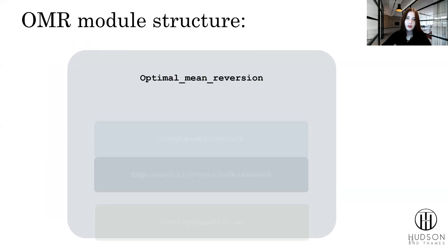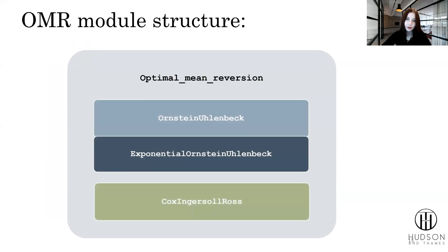Our optimal mean reversion module constitutes of three parts: Ornstein-Uhlenbeck model, Exponential Ornstein-Uhlenbeck model, and Cox-Ingersoll-Ross, respective to the chapters in the book of Professor Leung. Today we'll focus only on Ornstein-Uhlenbeck process and Ornstein-Uhlenbeck submodule.